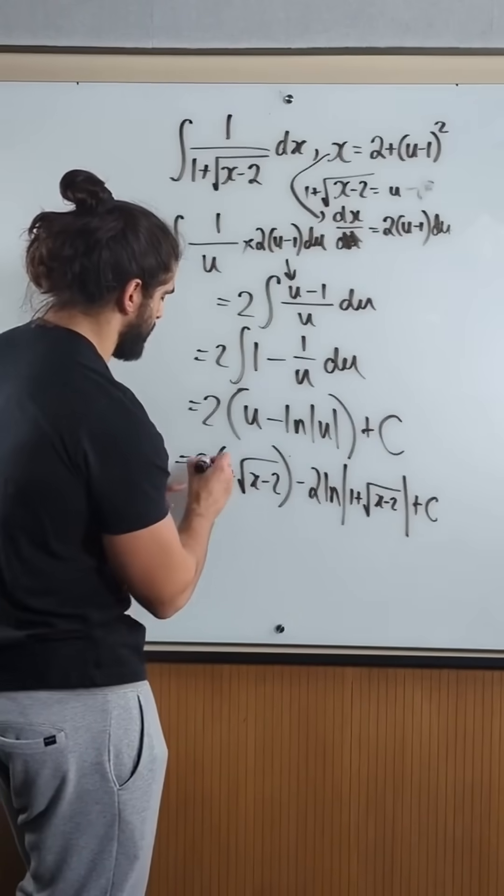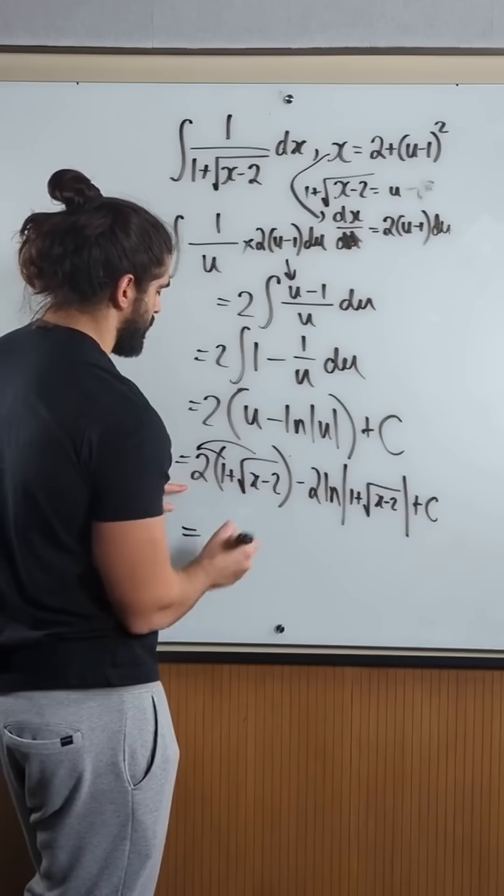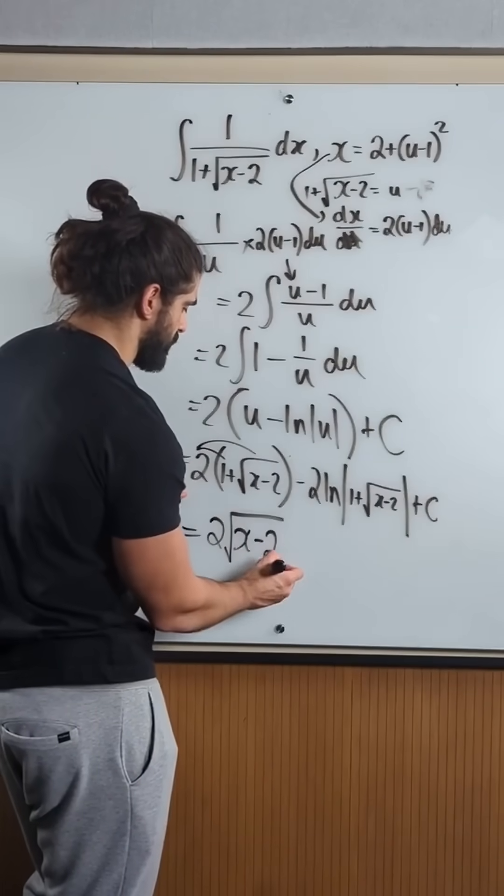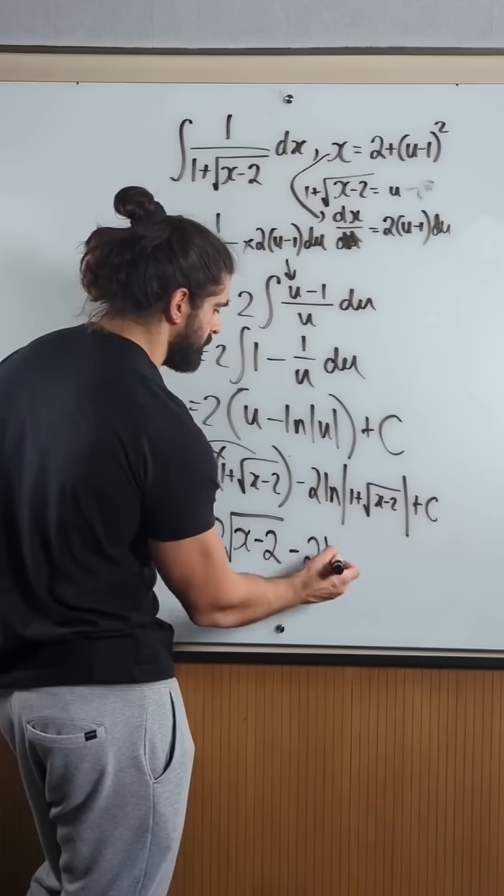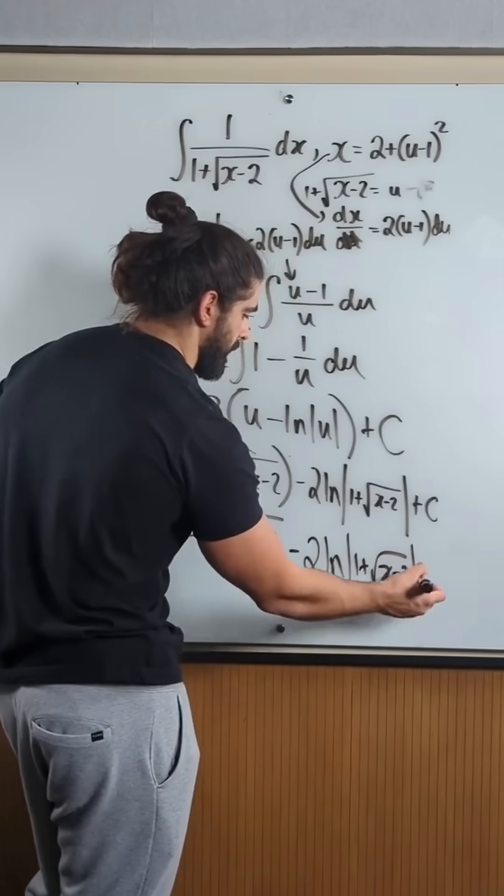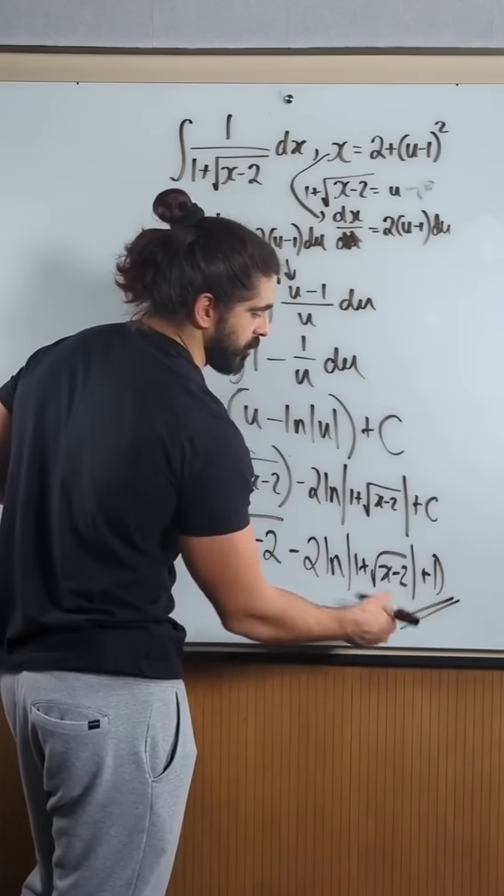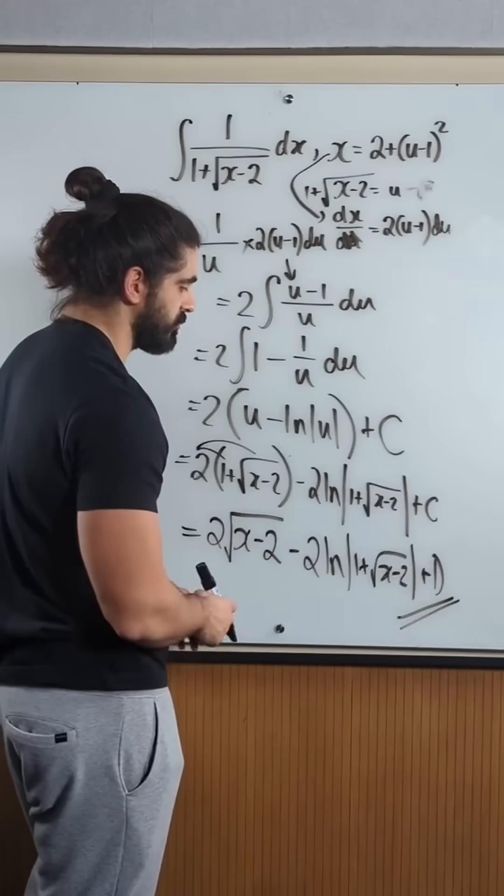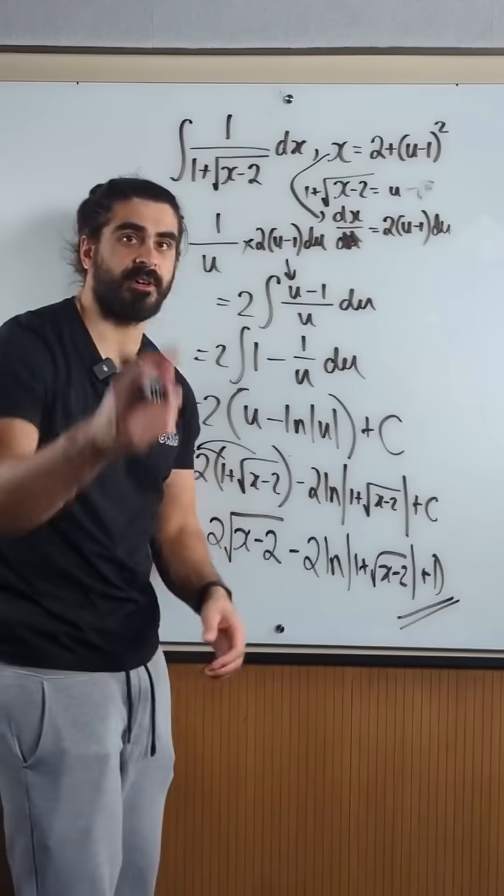So this 2 can actually merge with this plus c to make a different constant. So our actual answer is, instead of saying 2 plus, I'm going to say 2 root x minus 2, minus 2 ln, 1 plus root x minus 2, then plus d. You do not need to quantify what d is, you don't need to say d is c plus 2, you can just redefine it as d.